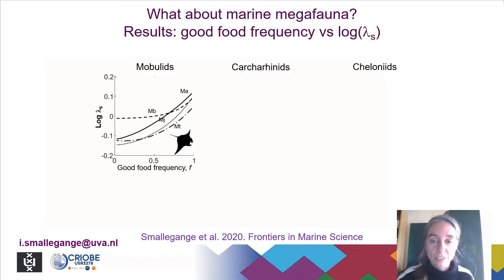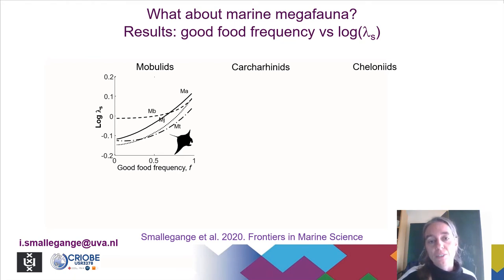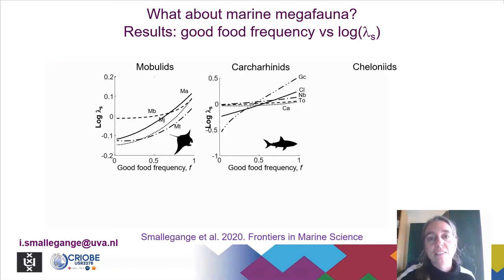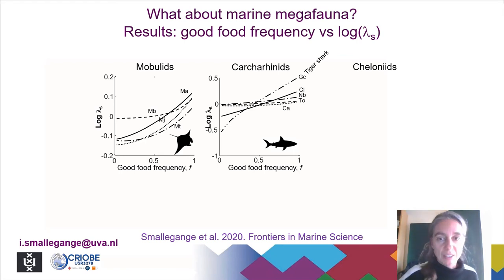Let's look at some of the results, starting with the frequency with which good food conditions occur over time. On the left-hand panel, you see the results for the four mobulid species, the giant rays. As the frequency of good food conditions increases along the x-axis, the population growth rate of all species increases, which seems quite natural to expect. Looking at the different reef sharks, one really stands out: the tiger shark, which shows a strong increase in population growth rate as the good food frequency increases. The other reef sharks show a less steep increase.